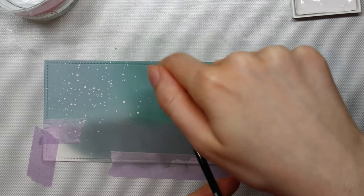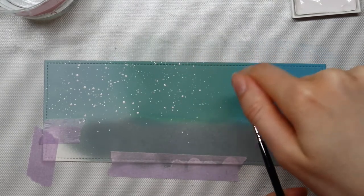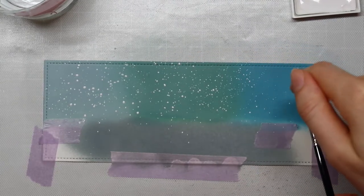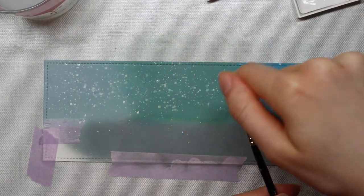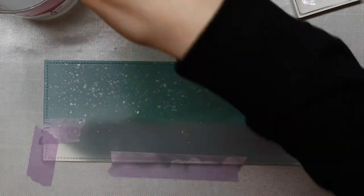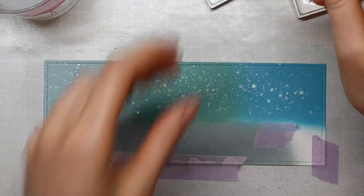Now that I'm done ink blending, I'm going in with some white watercolor paint and also some metallic paint to add some splatters here and there to make it look like snow is falling.